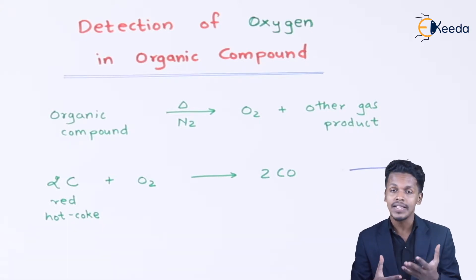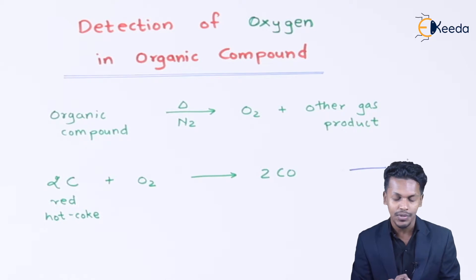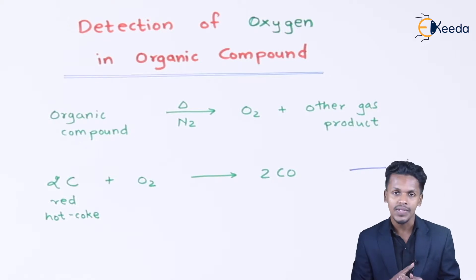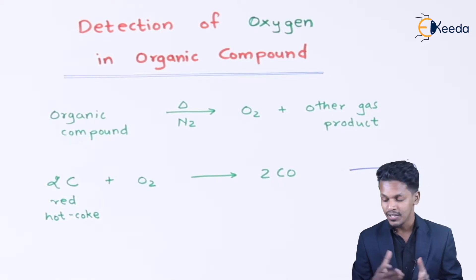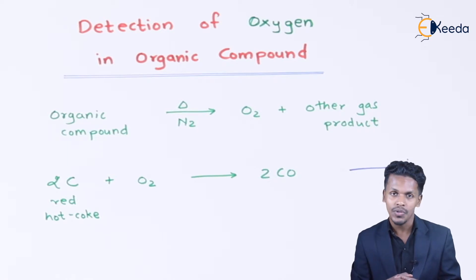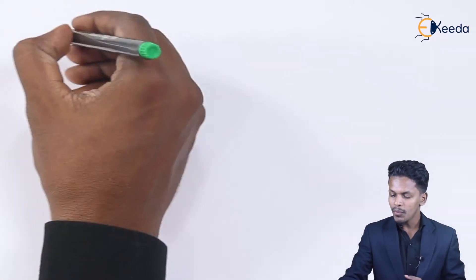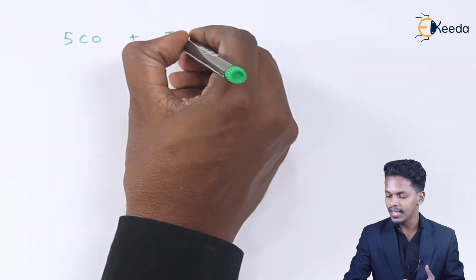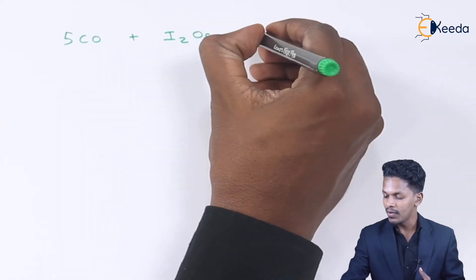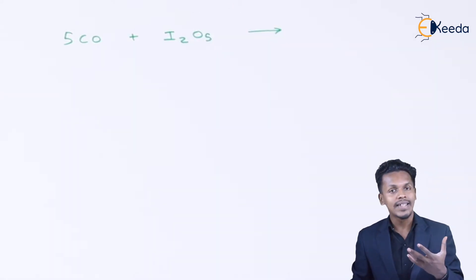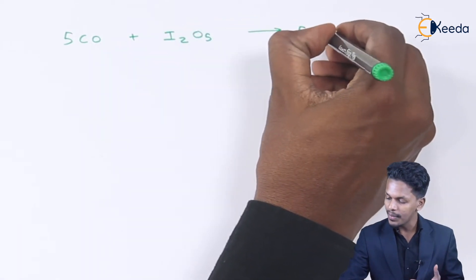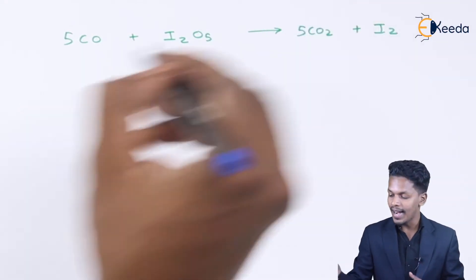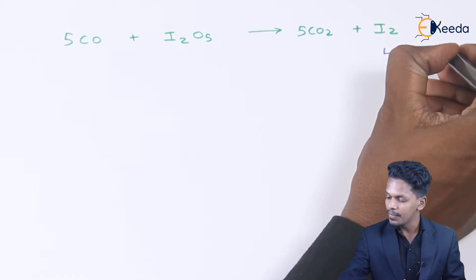The carbon monoxide produced is also a gaseous product. This carbon monoxide is then treated with iodine pentoxide (I₂O₅) to produce carbon dioxide. Equation 2: 5 moles of carbon monoxide reacts with I₂O₅ to produce 5 moles of carbon dioxide along with iodine.